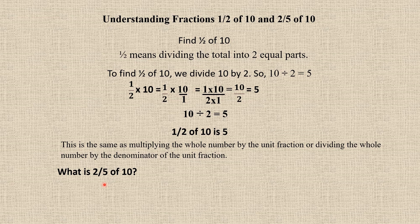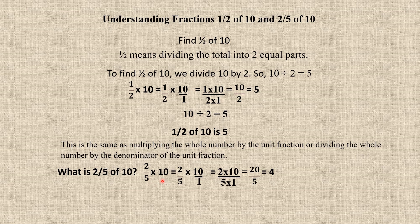Now let us extend this to a fraction other than a unit fraction: 2/5. What is 2/5 of 10? We write it as 2/5 × 10 = 2/5 × 10/1. Multiply numerators together and denominators together: we get 20 ÷ 5 = 4. So 2/5 of 10 is 4.